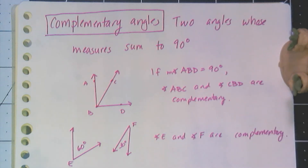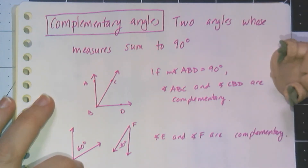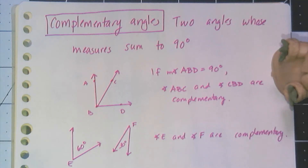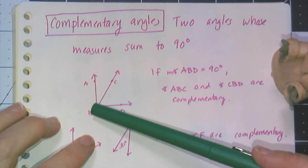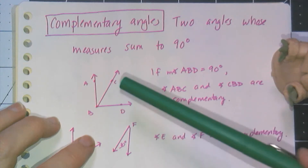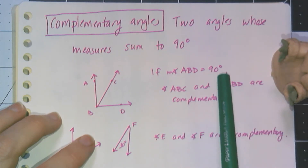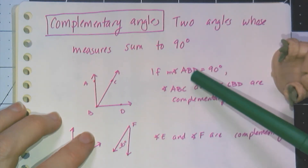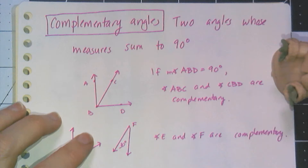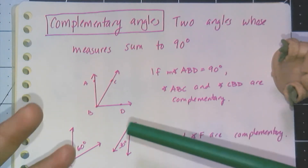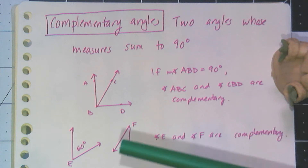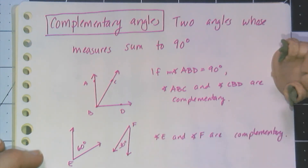You might be familiar with complementary angles. These are two angles whose measures sum to 90 degrees. You can see them two ways visually: one way is to create a right angle and add an additional ray that breaks it into two separate angles. If the measure of angle ABD is 90 degrees, then angles ABC and CBD are complementary. But they don't have to be attached — complementary just means they add up to 90 degrees, so angles E and angle F can be completely separated and still be complementary.